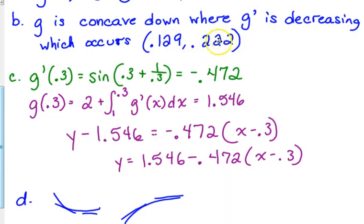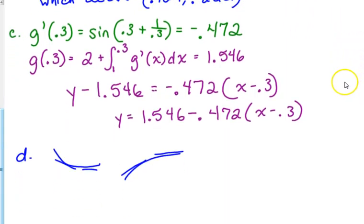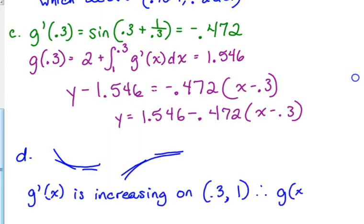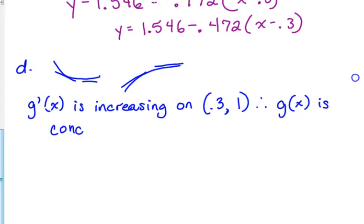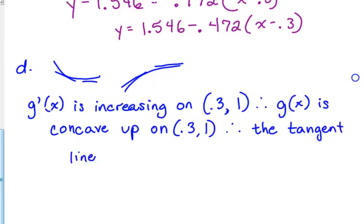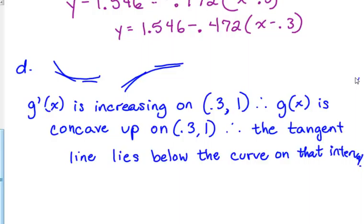I would say g prime of x is increasing on 0.3 to 1. Therefore, g of x is concave up on 0.3 to 1. Therefore, the tangent line lies below the curve on this interval. And that's just a one-point part, answering with the reason.